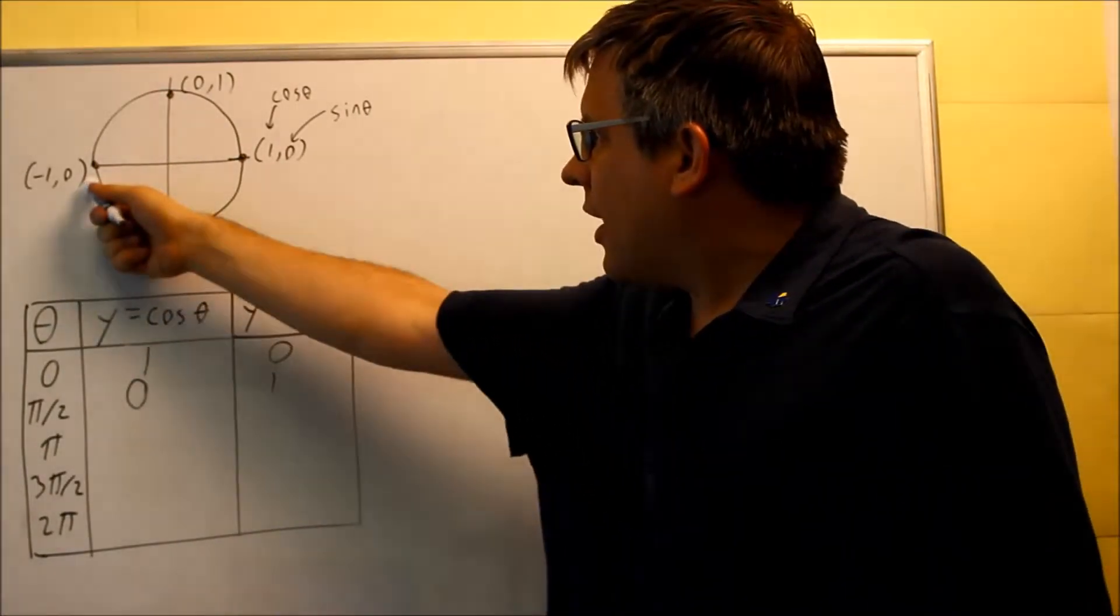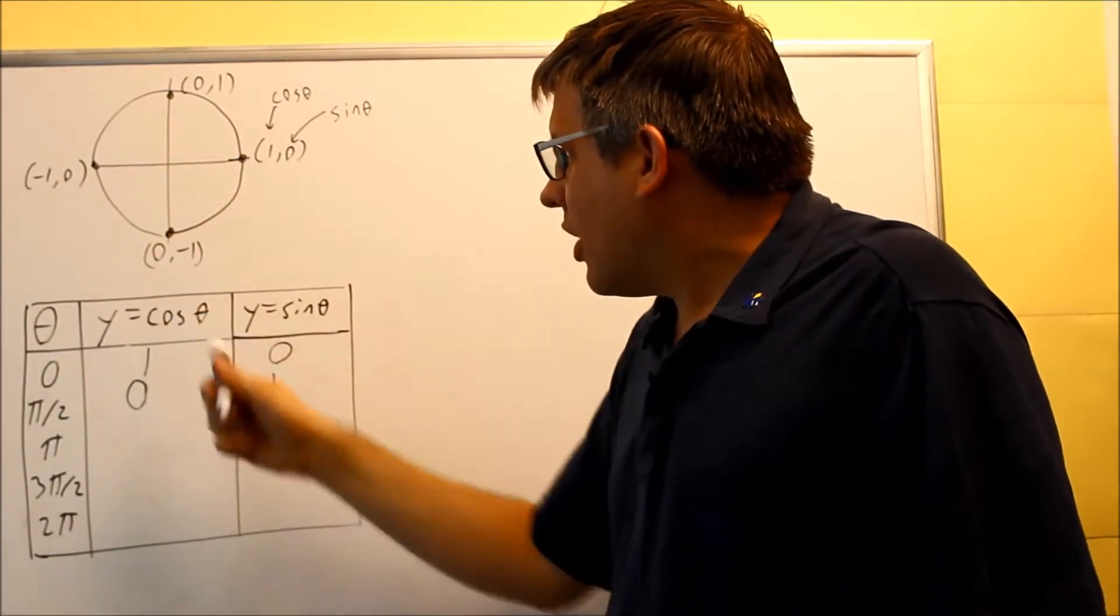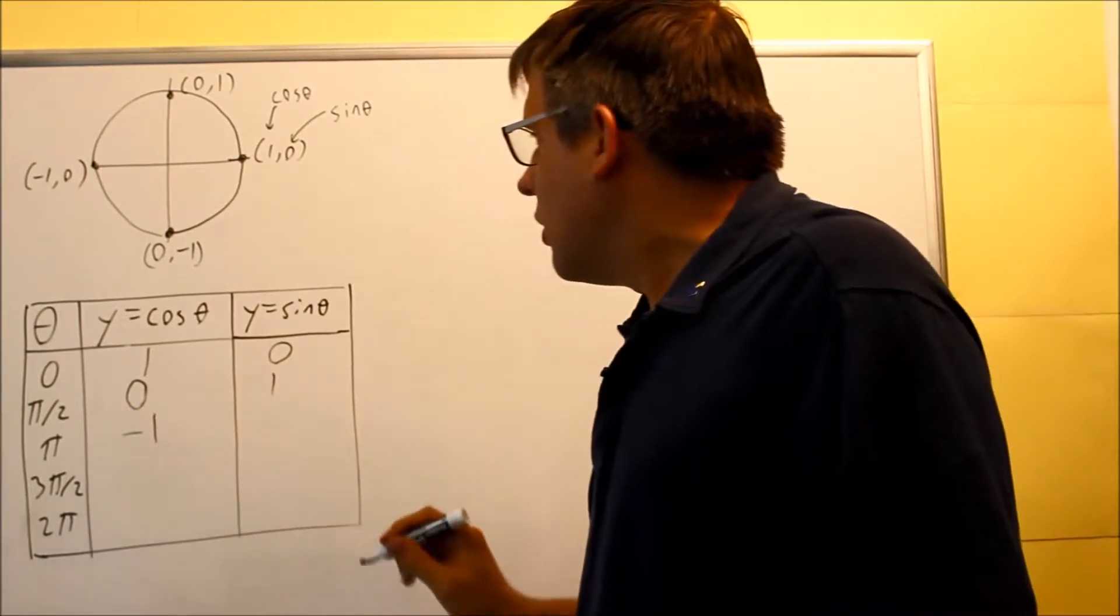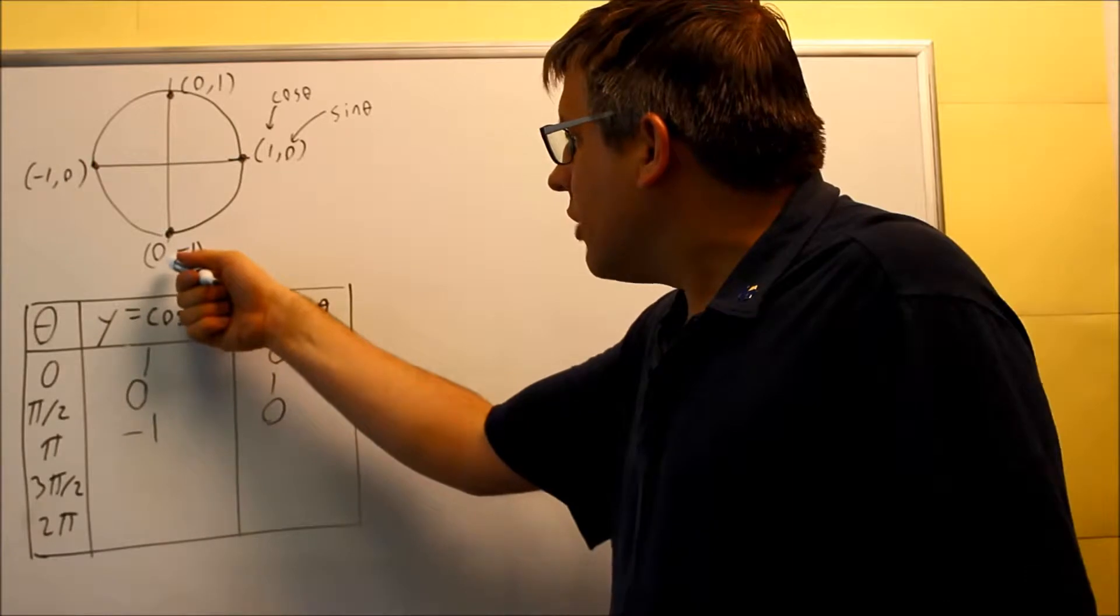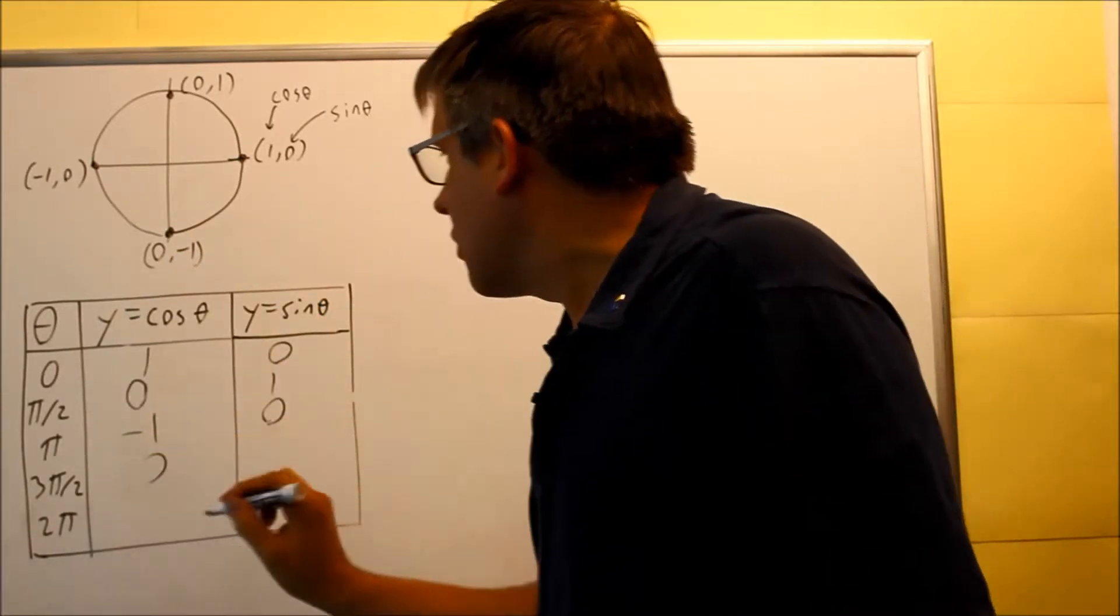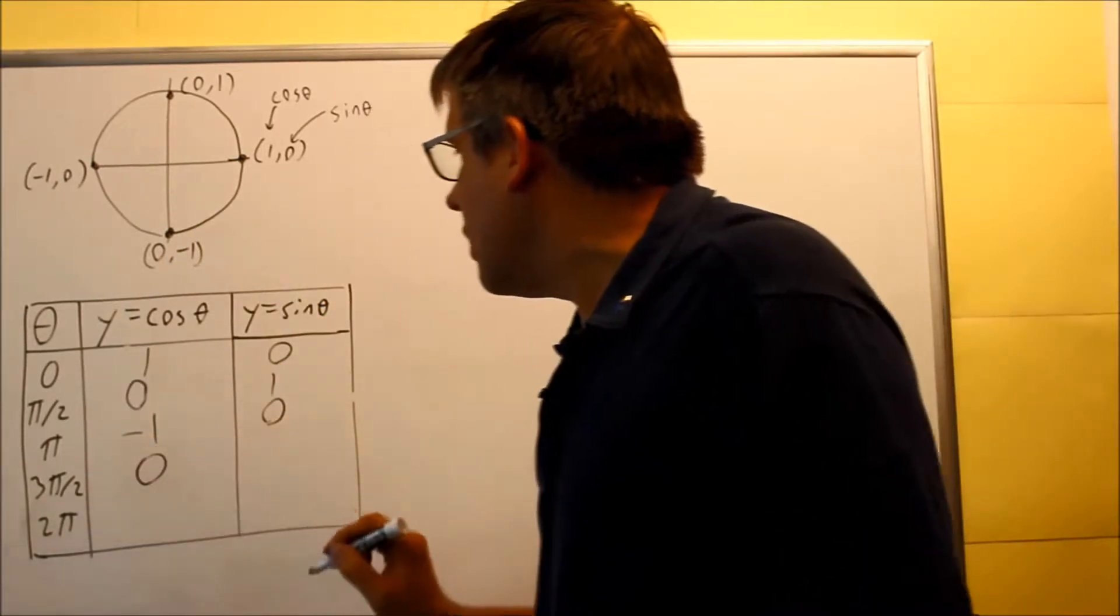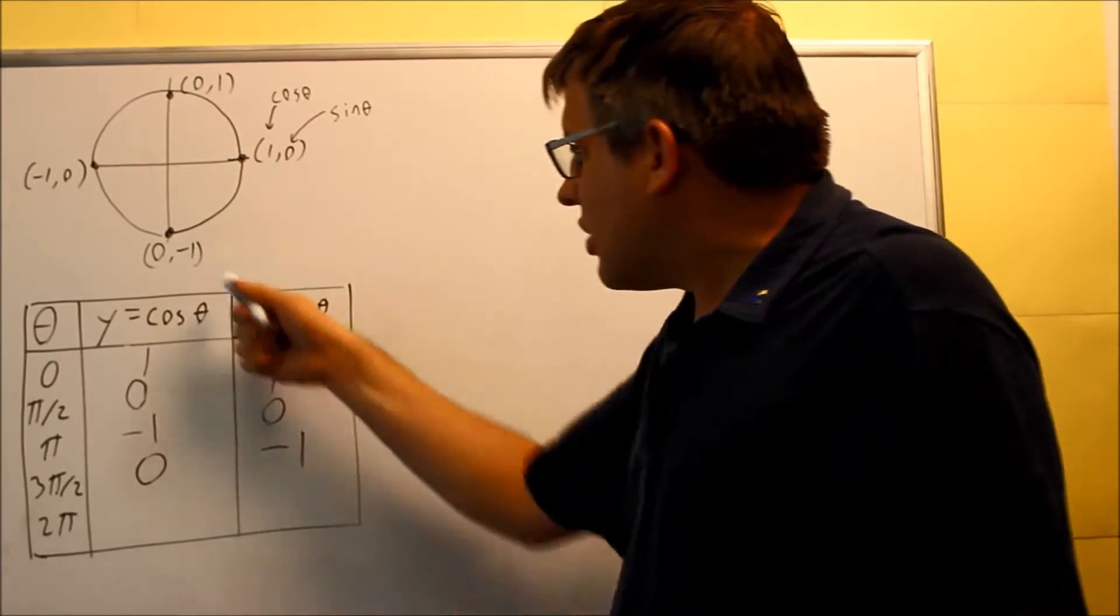Next, when I come to pi, the x value, the cosine value is negative one, y value zero. Then I do three pi over two down here, cosine zero, and the sine value is negative one.